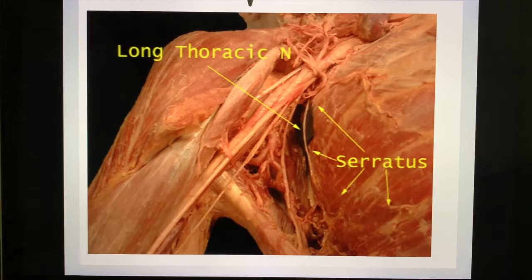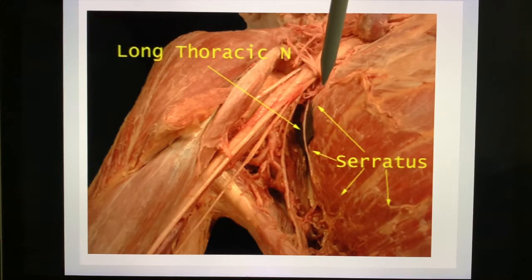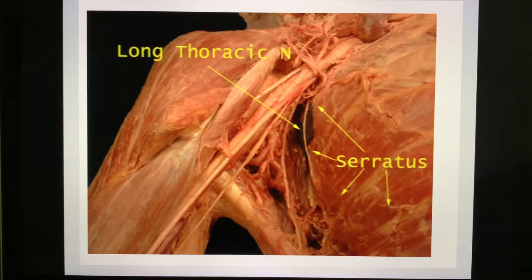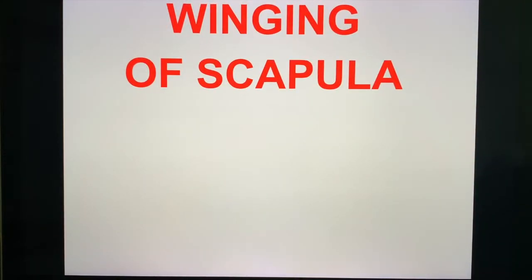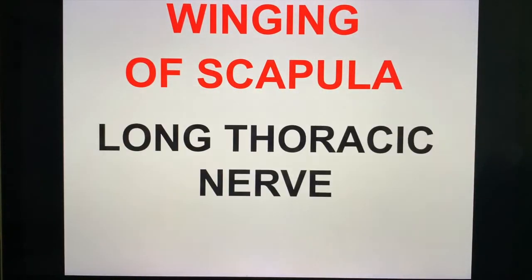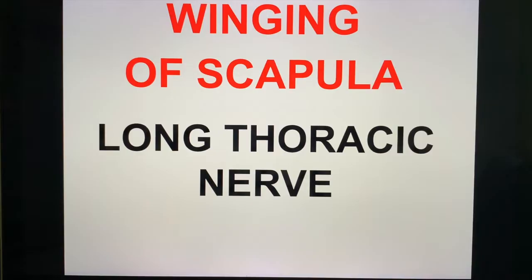Here is your long thoracic nerve, and this muscle is your serratus anterior. Everyone heading to the boards or preparing for an exam should remember: the long thoracic nerve supplies the serratus anterior. If you have injury to the long thoracic nerve, you will get the famous winging of the scapula.